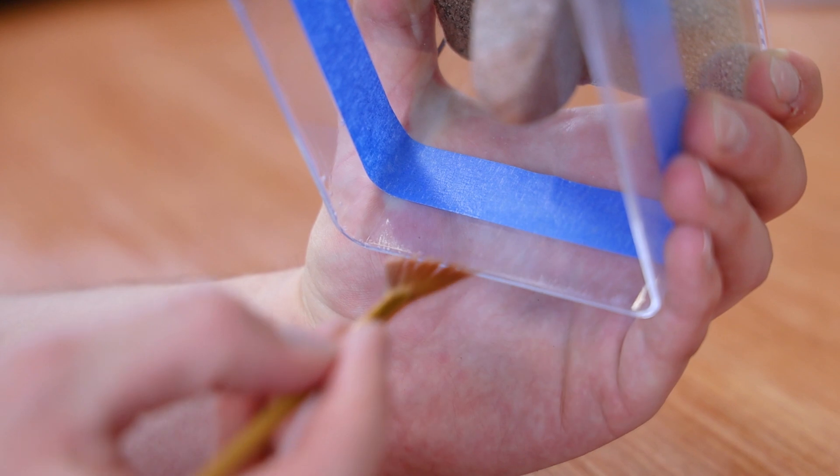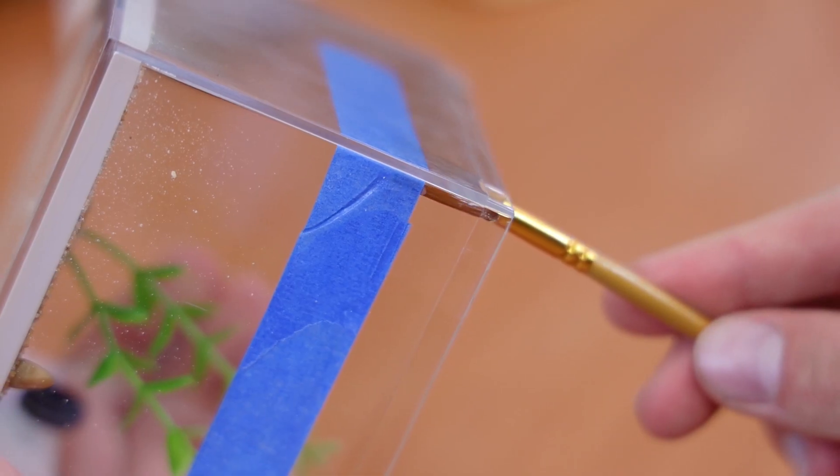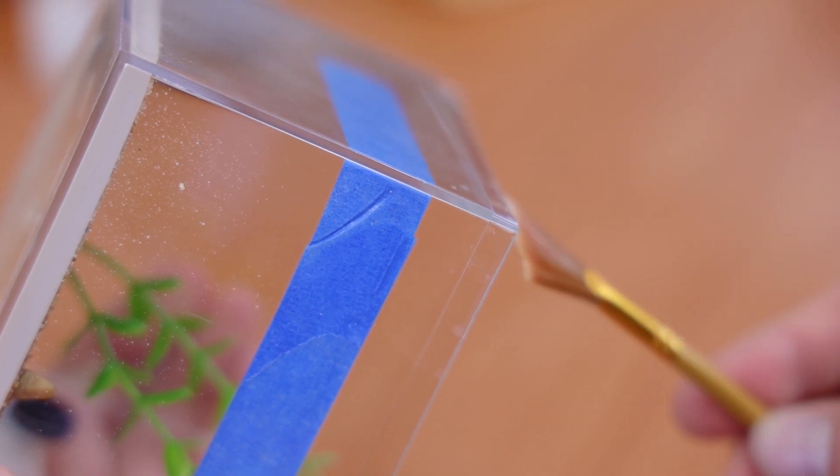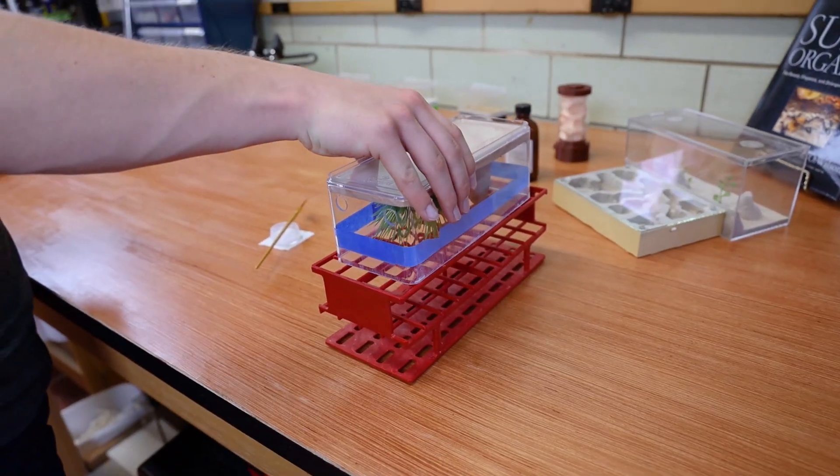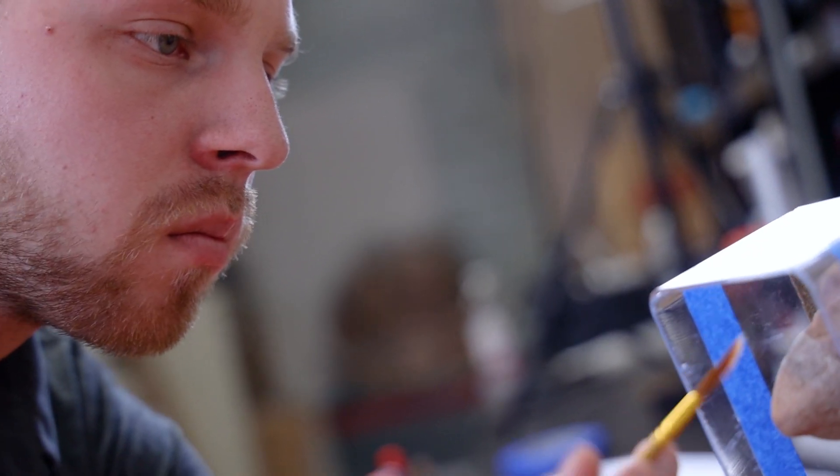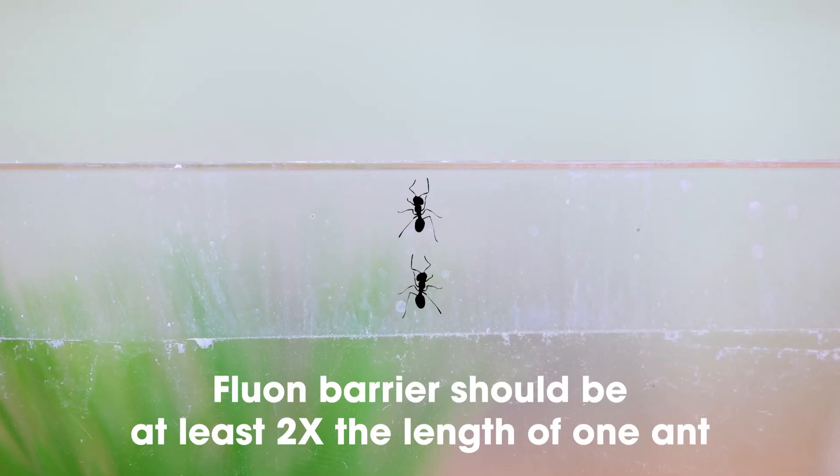Curved containers are the easiest to apply Fluon to. If you are using a container with right angle corners, make sure the entire surface is coated. Keep the box inverted until the Fluon dries, which usually takes a few minutes. I prefer to apply two coats, letting it dry between each.